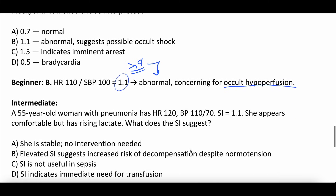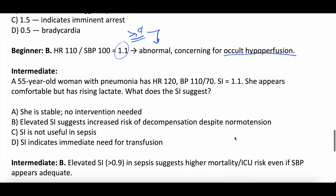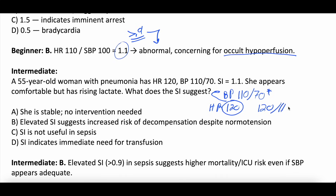Intermediate question: a 55-year-old woman with pneumonia has a heart rate of 120, blood pressure of 110 over 70, shock index of 1.1. She appears comfortable but has a rising lactate. What does this shock index suggest? A) She's stable, no intervention needed; B) Elevated shock index suggests increased risk of decompensation despite being normotensive; C) Shock index is not useful in sepsis; D) Shock index indicates immediate need for transfusion. Correct answer is B. Elevated shock index above 0.9 in sepsis suggests higher mortality or ICU risk even if the SBP appears adequate. Her heart rate of 120 is compensating — maintaining the blood pressure — but that shock index of 1.1 (120 divided by 110) is greater than 0.9 and correlated with poor outcomes.